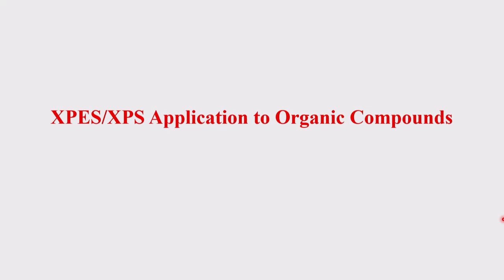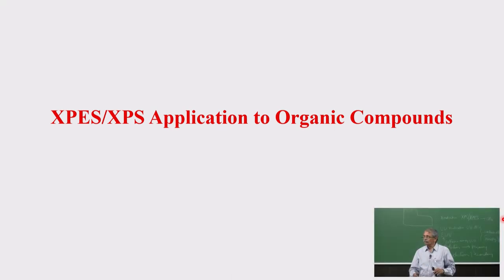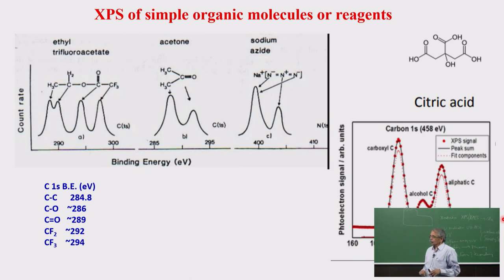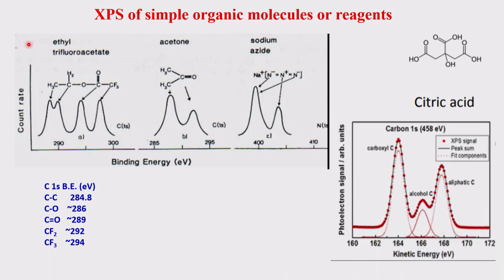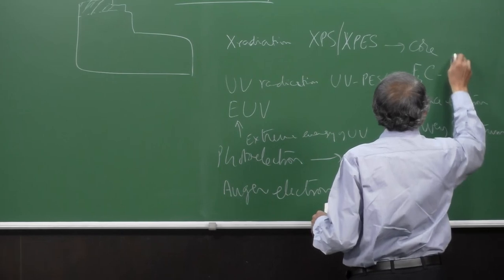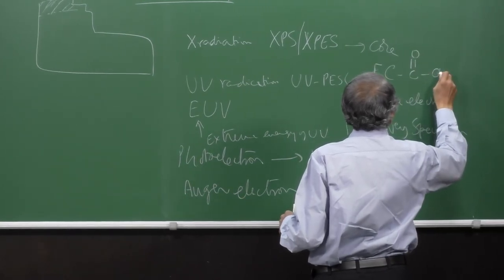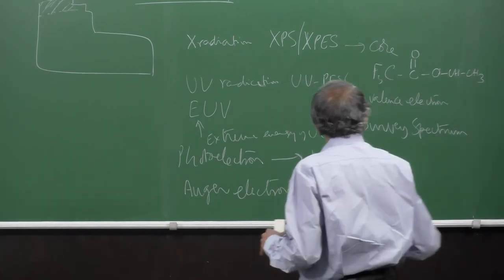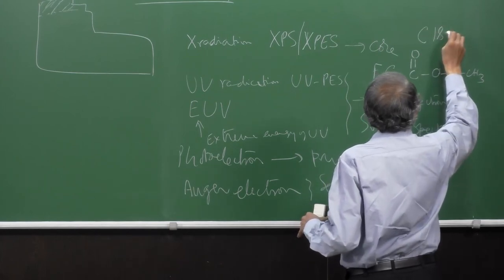Let us look at one or two examples before taking up more applications. All examples are based on photoelectron spectrum — primary electron emission only, not the secondary Auger process; any secondary process peaks are ignored. Consider the molecule trifluoroethyl trifluoroacetate: CF3–COO–CH2–CF3. We are looking at the carbon 1s spectrum, which appears in the binding energy range of approximately 282 to 300 eV.